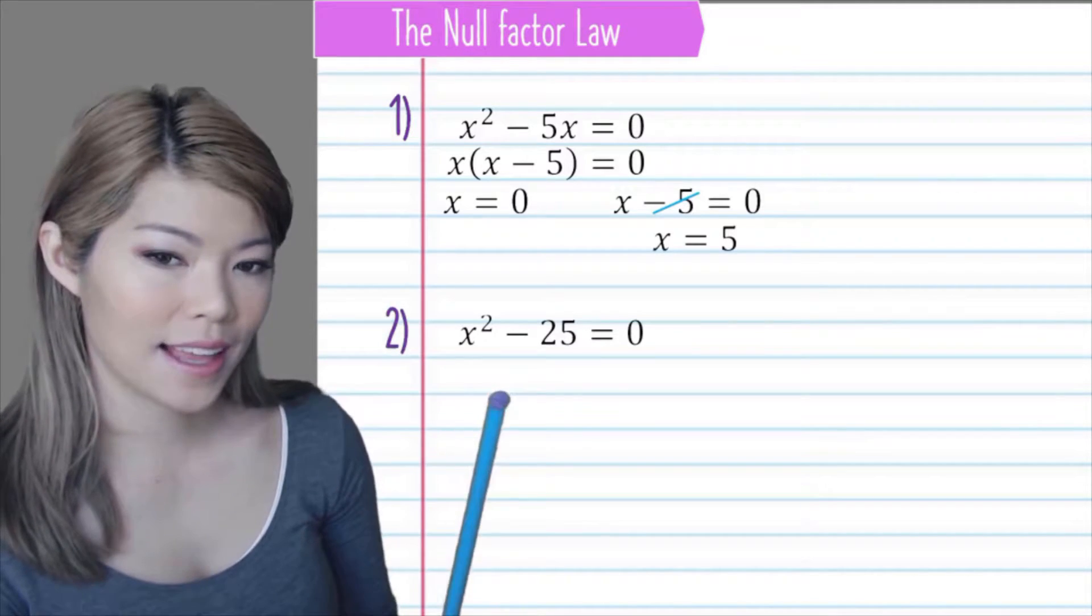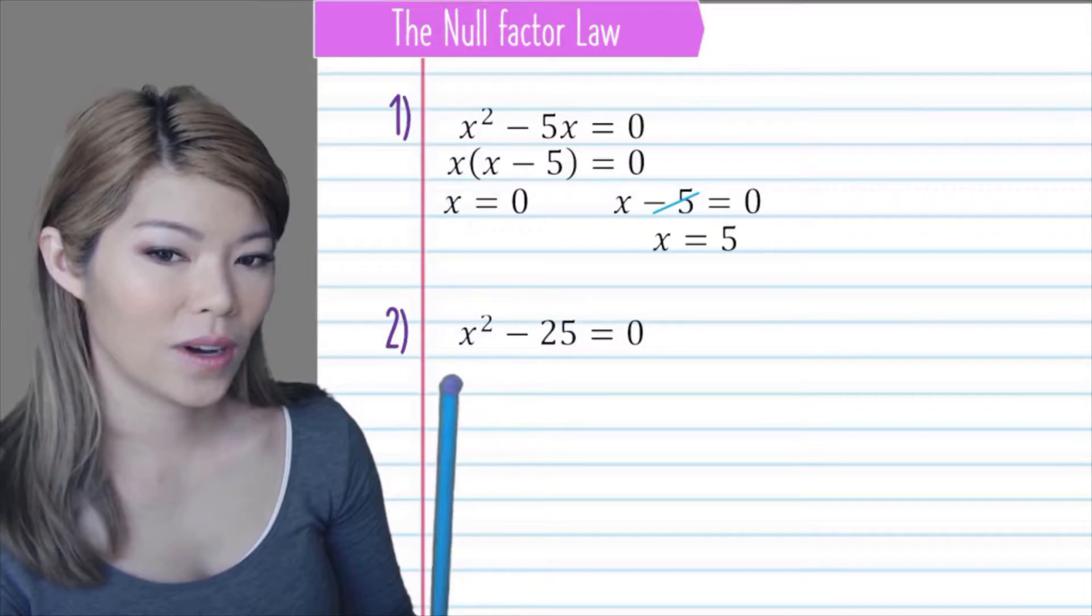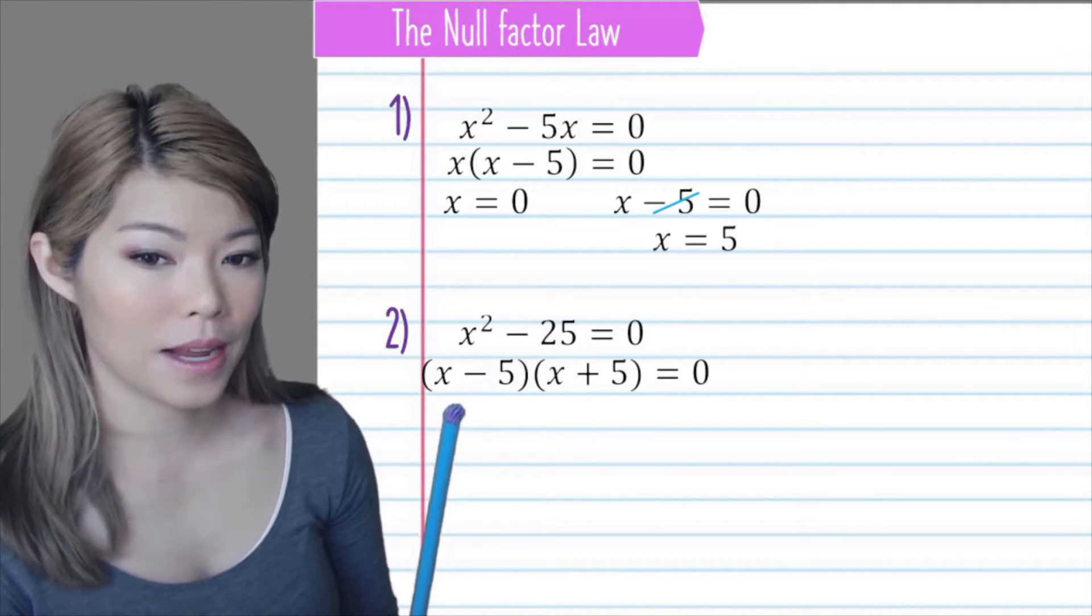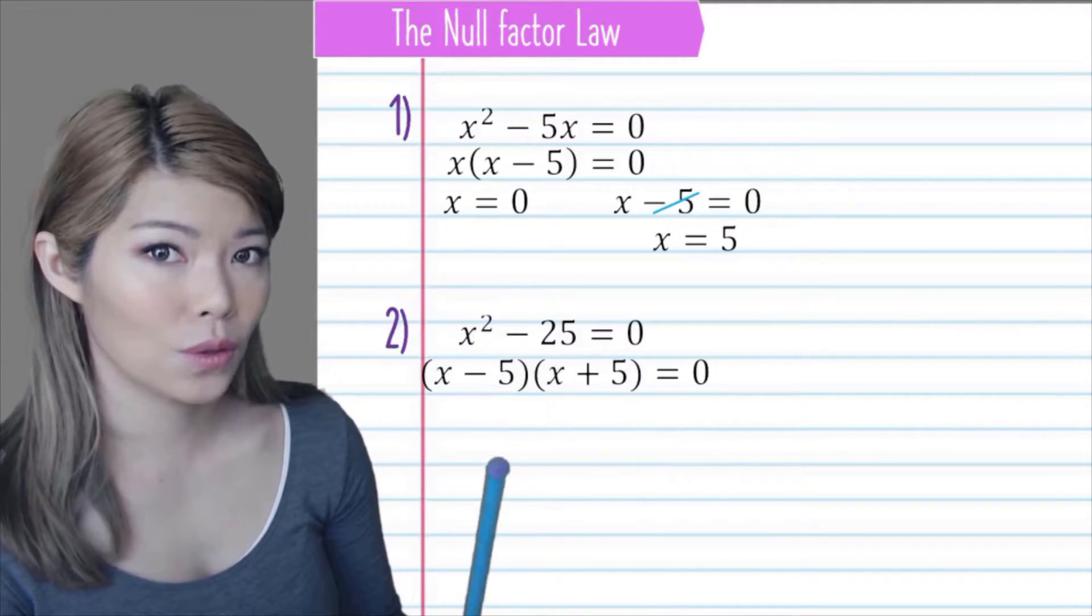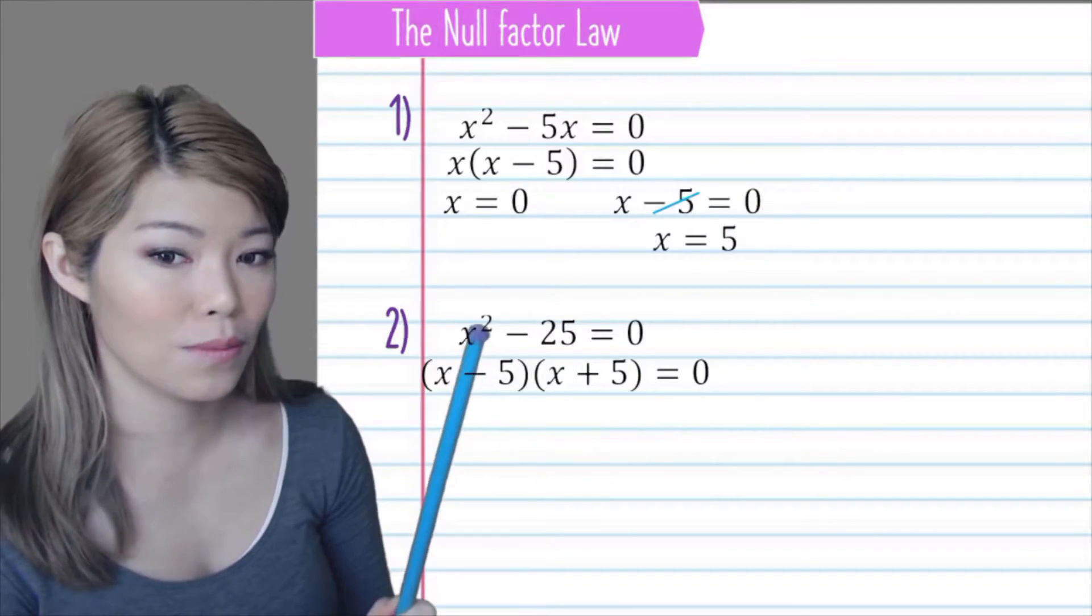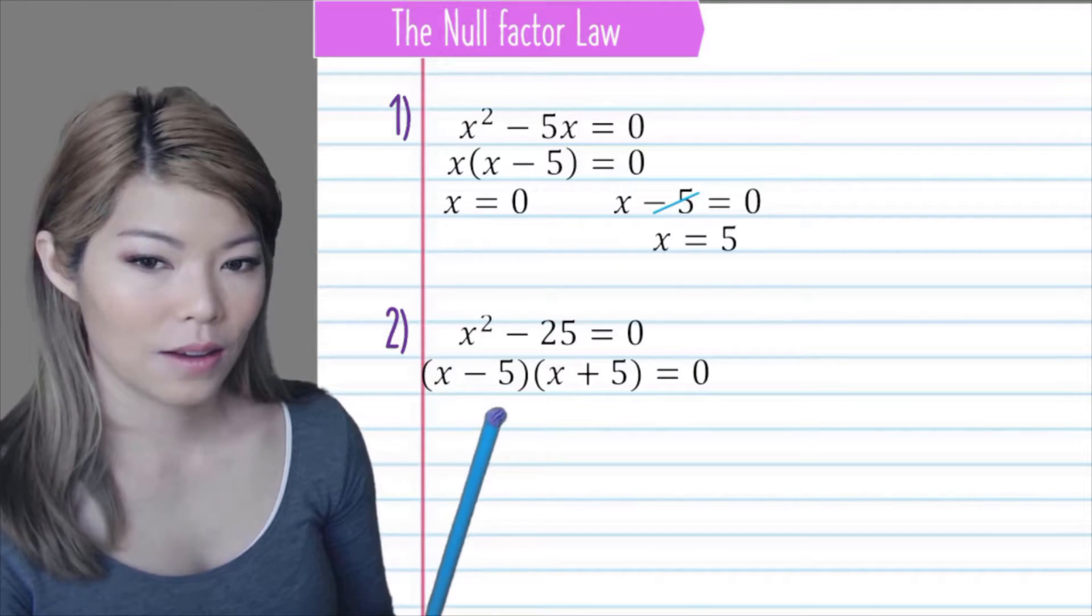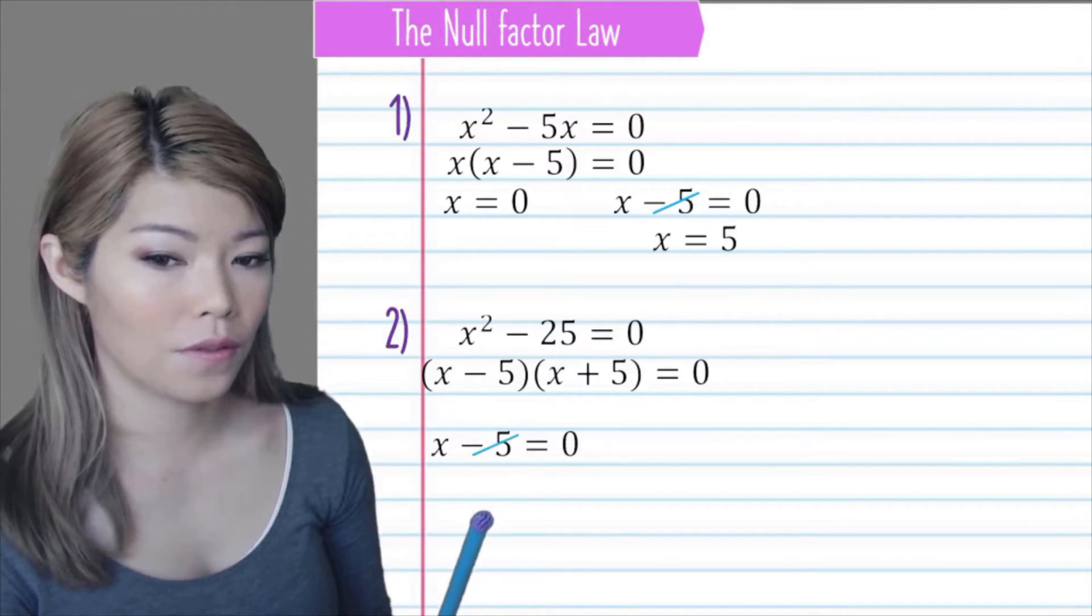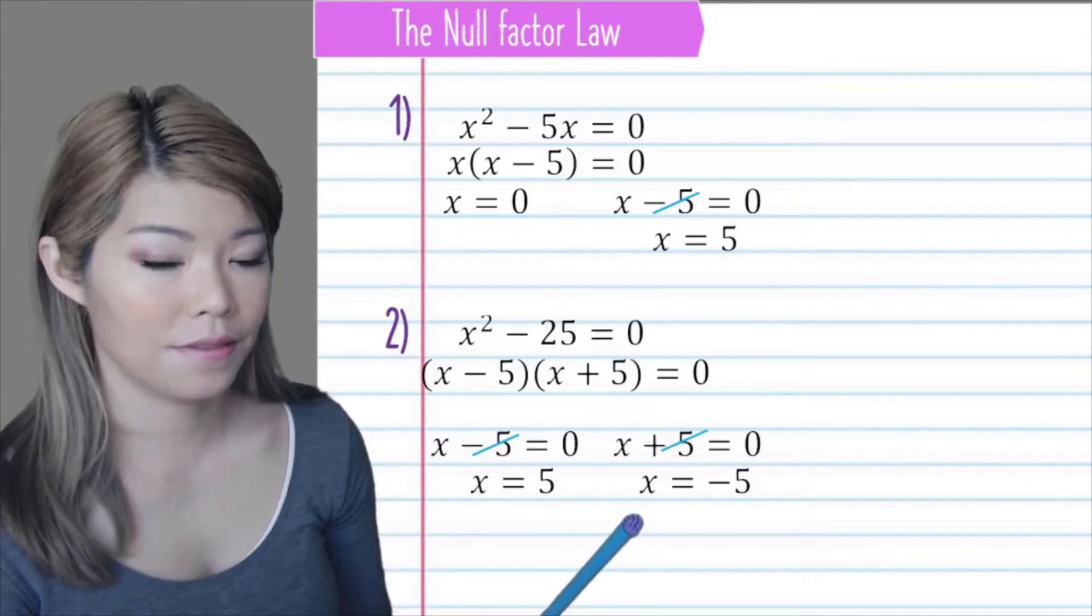What about when we get questions like this? Is this the same as that? No, it's not. This one is the difference of two squares. So it becomes minus 5 and plus 5. If you've forgotten how to do difference of two squares, please click on the little i in the corner and it'll take you to that video. You have to make sure that you can recognise this when you see it. So now we have the answers as x minus 5 is 0, so x is 5. And x plus 5 is 0, so x is negative 5.